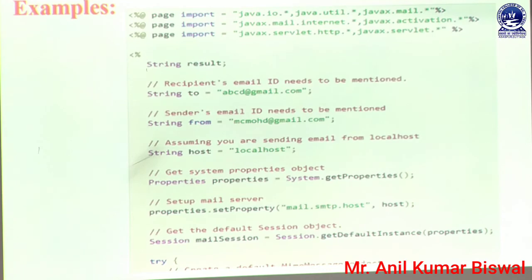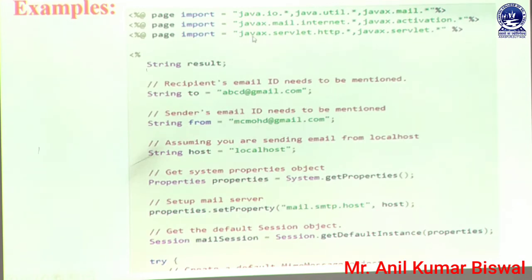Another two packages also need to be added in our program: the GenericServlet and the HttpServlet package, which are already embedded in this program. These are defined using the page directive attribute import, like: javax.servlet.http.* — where the star denotes all relevant predefined classes, predefined methods, and predefined objects which are easily added in our program.